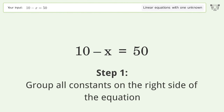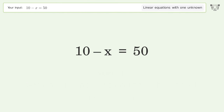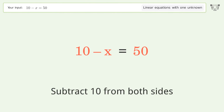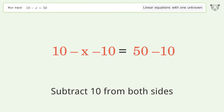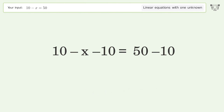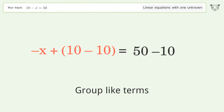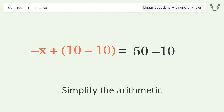Group all constants on the right side of the equation. Subtract 10 from both sides. Group like terms. Simplify the arithmetic.